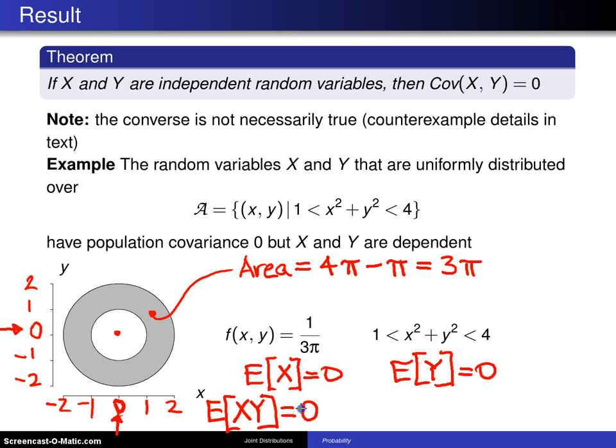this happens to be 0, which means by the shortcut formula, the covariance of X and Y is the expected value of XY, which is 0, minus the expected value of X times the expected value of Y, which is 0 times 0.